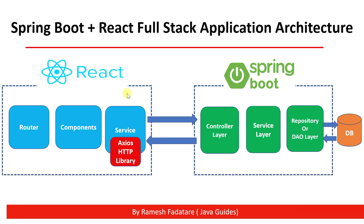Now let's move to React application architecture. In React we have different layers like Router, Components, and Services. Different developers follow different architecture or project structures in React applications, but typically there are three layers: a Components layer, a Service layer, and a Router layer. In the Router we typically configure a URL corresponding to components, and in Components we keep all the component-related UI logic.